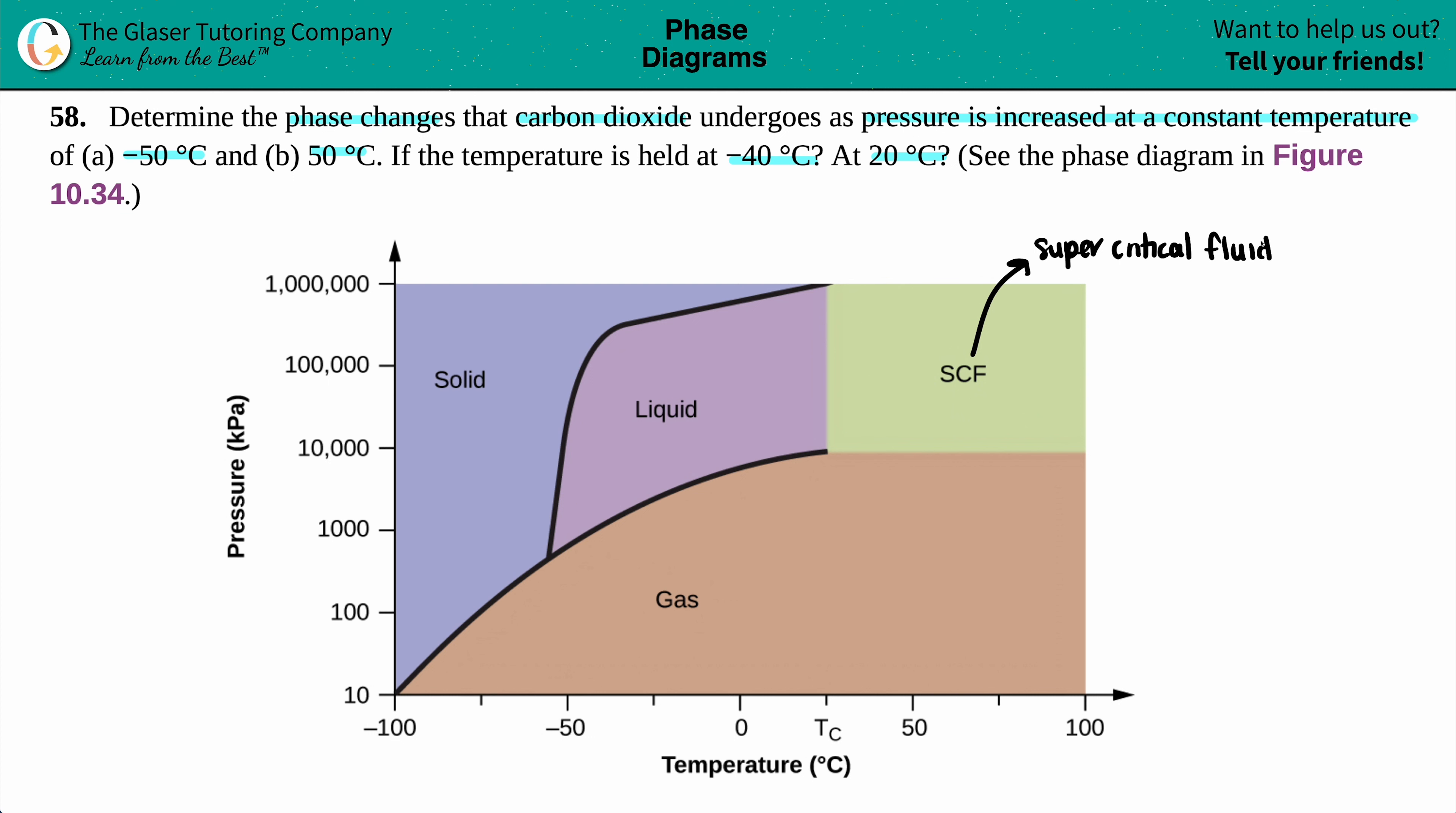Now, supercritical fluid is one state in itself in which the substance, in this case carbon dioxide, will have intermediate properties, a mixture of liquid and gas properties. But it's still classified as one phase. So, let's get started.